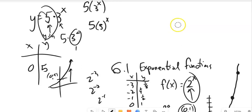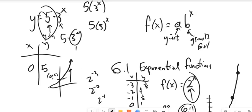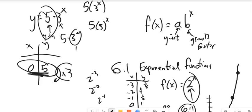Here's my general form for it. I'll write it as a function: f(x) equals a times b to the x. a is the y-intercept, or you could say it's the initial value. And b is the growth factor. So in this one, (0,5), and then that multiplier would be 3.